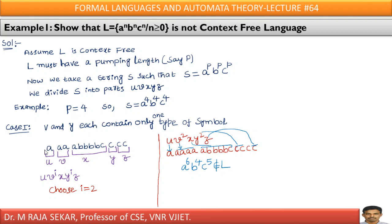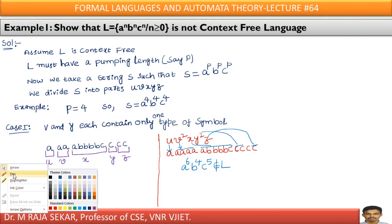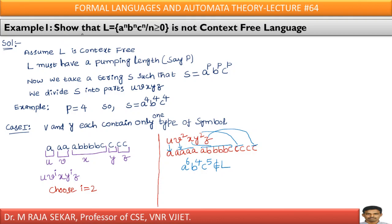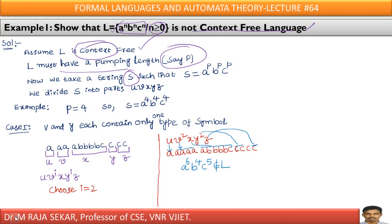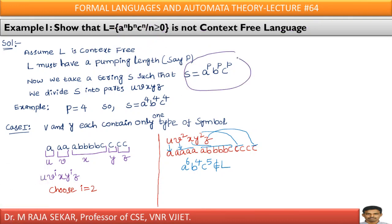Now we will try to understand pumping lemma with a simple example. Show that L = {a^n b^n c^n | n ≥ 0} is not a context free language. As we are using proof by contradiction, I must assume it is a context free language. As it is context free, according to pumping lemma, L must have a pumping length, say p. Let me choose a string s from this language L. Therefore, s = a^p b^p c^p.